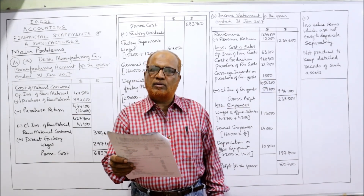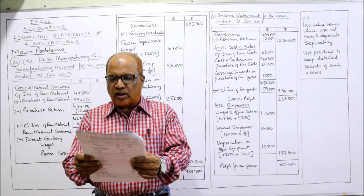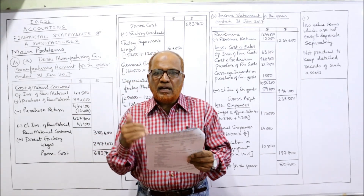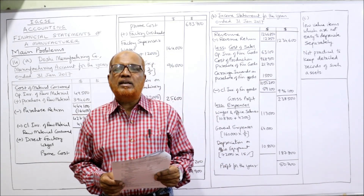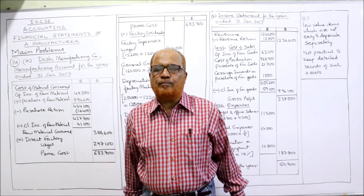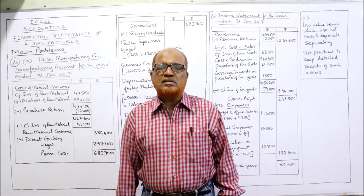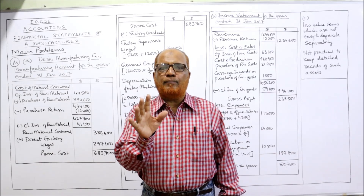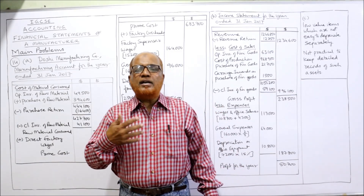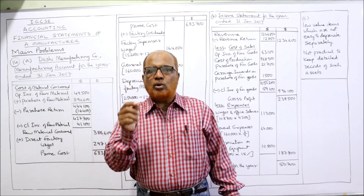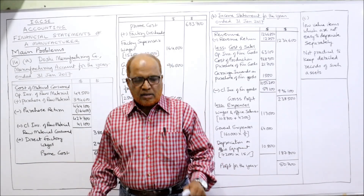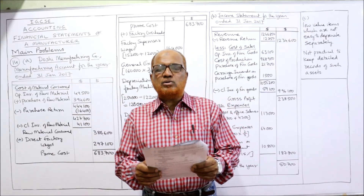Then revenue: 12,46,850 — revenue means sales. And revenue return, or return inward, means sales return. From revenue we subtract revenue return. Always keep a notebook, calculator, and pen ready while watching the video. A number of points I will explain, so note down each and every point so that you can remember for a long period of time.